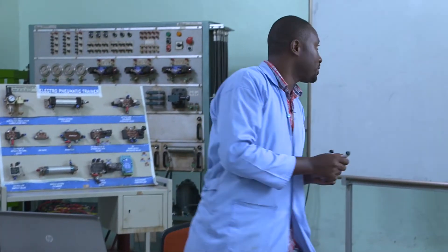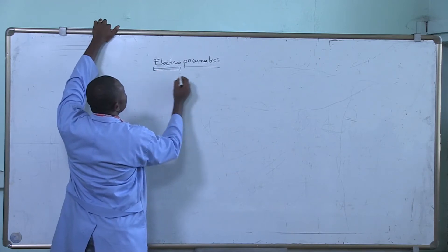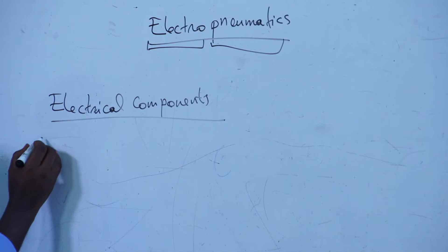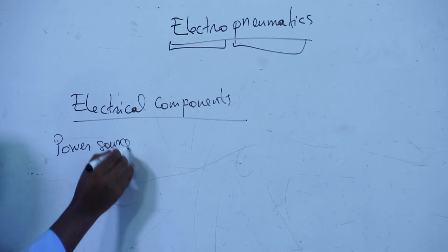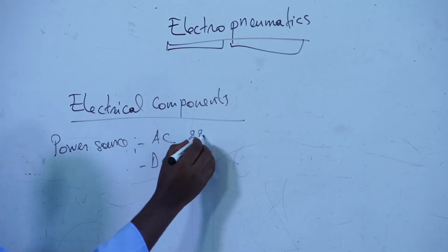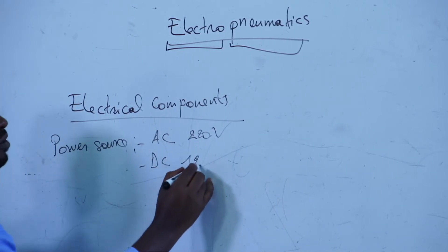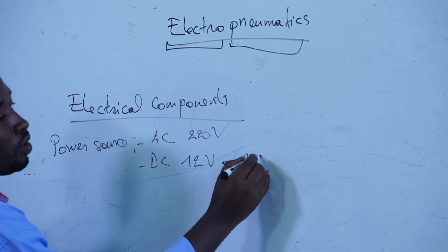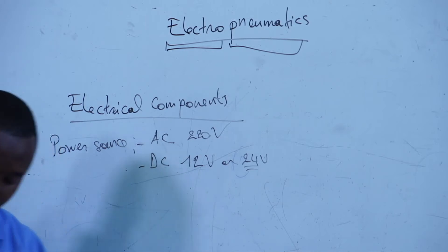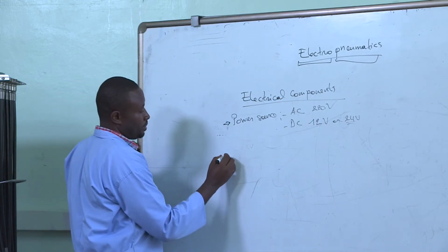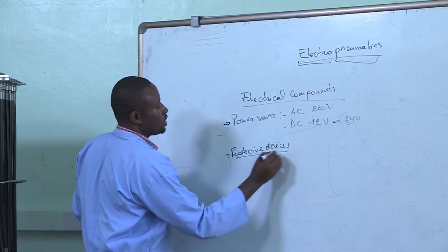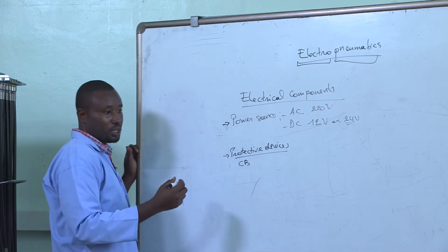Let me write some components here. So there is the electrical side and there is the pneumatic side. With electrical components we will need of course a power source — it might be AC or DC, like 220V AC, or 12V or 24V DC. The most commonly used is 24V DC. We will also need protective devices, just like a circuit breaker or a fuse.